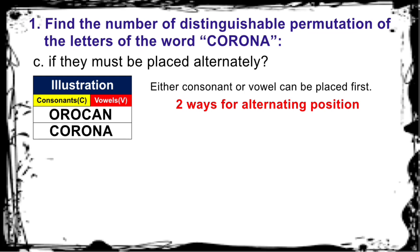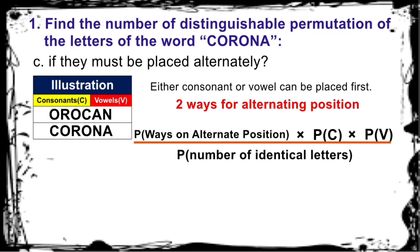To solve, we need to find the permutation on ways of alternating position times permutation of the consonants times the permutation of the vowels. And we divide it again to what? Yes, to the permutation of the identical letter O's. It is equal to permutation of 2 taken 2 for alternate position, permutation of 3 taken 3 for the consonants, and permutation of 3 taken 3 for the vowels, divided by permutation of 2 taken 2 for identical letter O's.